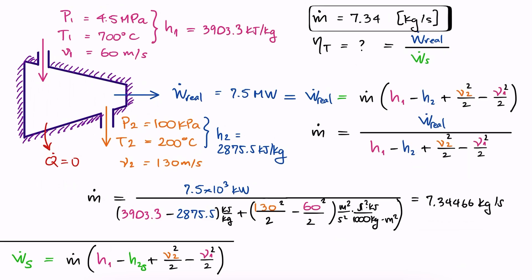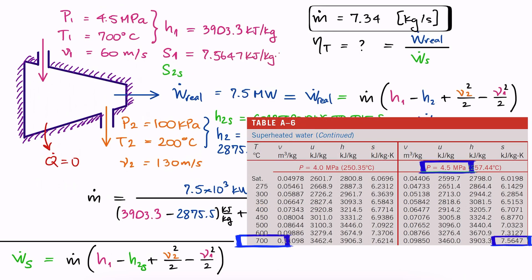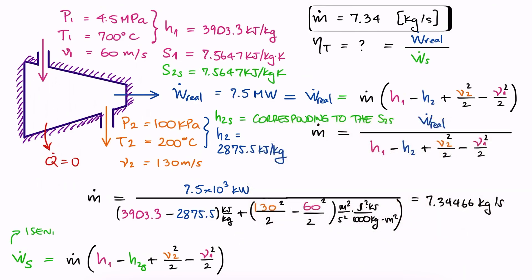Now, going back to the isentropic work case, we need H2S. That term is the specific enthalpy at the exit for the isentropic case, meaning that we need to find the entropy at 1, and assume that the entropy is still the same at 2. We're now looking to find H2S from S2S. Since we have P1 and T1, we go to our steam tables to find S1, which again is the same as S2S.